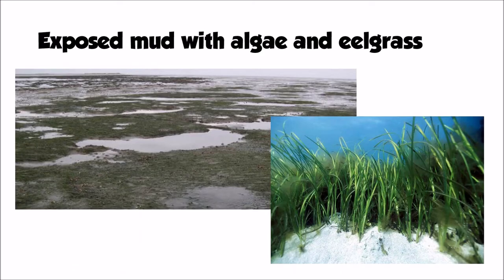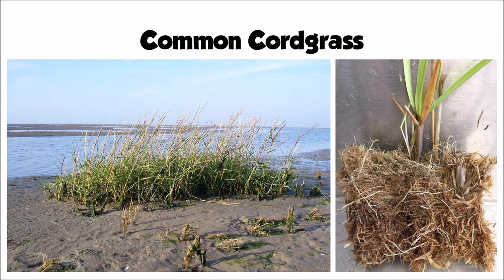Some photos here show algae covering the mud, giving it a green appearance. We can also see an example of eel grass, which is very good at slowing water velocity due to its huge surface area between all its stems, thereby encouraging deposition. There's also a photo of that cord grass or spartina — you can see the above-ground vegetation trapping sand and mud, and a great photo of the root system showing just how dense those roots are and how well they anchor all of that mud in place.